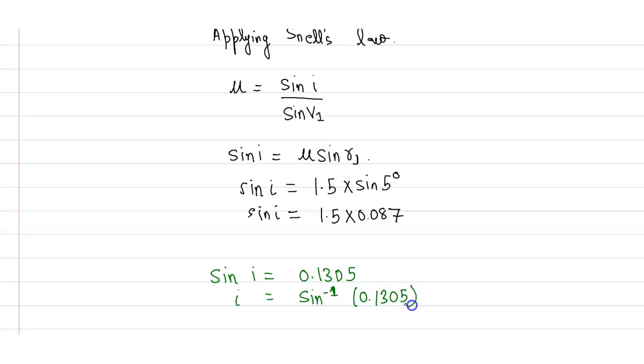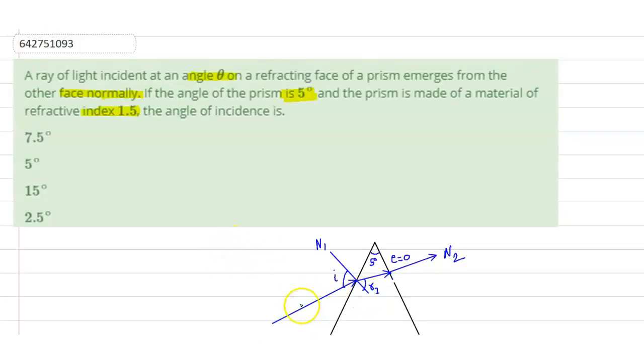of 0.1305. So i is 7.5 degrees. That means this angle which was coming inside the prism was making 7.5 degrees with the normal of the face of the prism. So from here our first option is the correct option. I hope I have solved your question. Thank you.